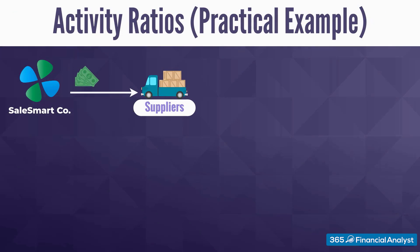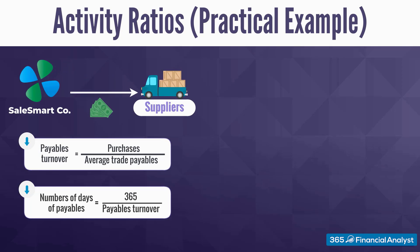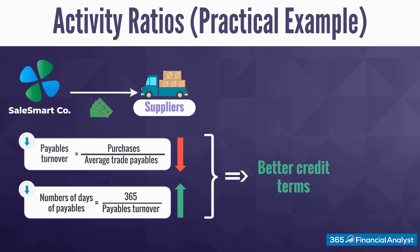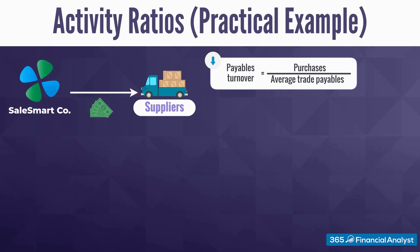To get a solid grasp on the firm's operations, you can also calculate the payables turnover and the number of days of payables. Bear in mind that lower turnover ratios and longer days of payables could be a sign of better credit terms agreed with suppliers — you would always want to delay cash outflows. However, too prolonged days of payables may also be an indication that an organisation struggles to find the cash needed to pay its suppliers. It's the industry norm that helps companies strike the right balance. The payables turnover multiple shows how many times the outstanding payables amount has been settled during a period. Note that the formula uses purchases in the numerator — these are purchases made by SalesSmart itself, as the company buys goods and services from suppliers, some of them on credit.